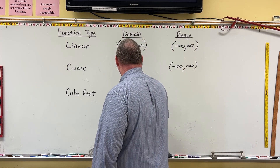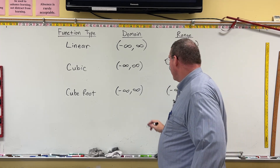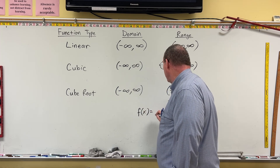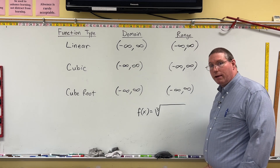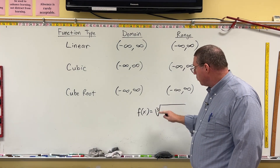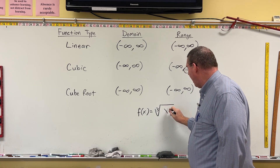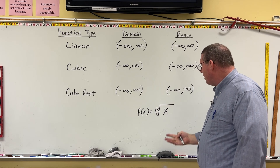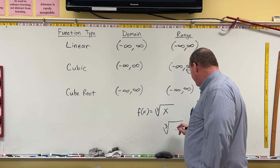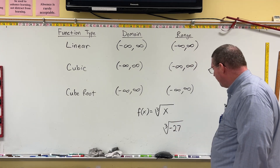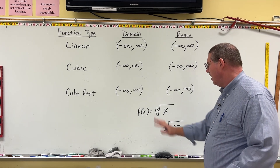Cube roots are exactly the same — domain of negative infinity to positive infinity, and range of negative infinity to positive infinity. A cube root looks like f of x equals the cube root of x, where there's a 3 inside the radical symbol. Can you take the cube root of a negative number? Sure. For example, we can take the cube root of negative 27. The cube root asks: what number multiplied by itself three times gives this result?